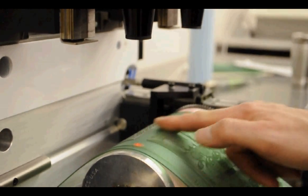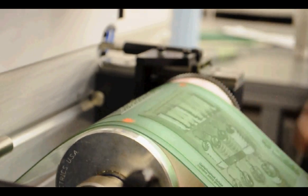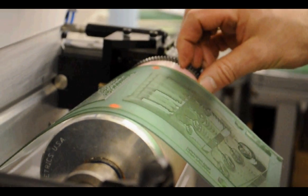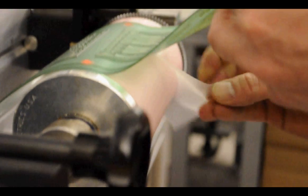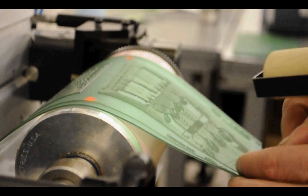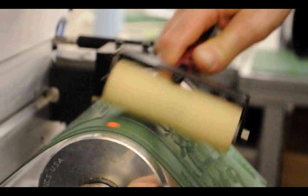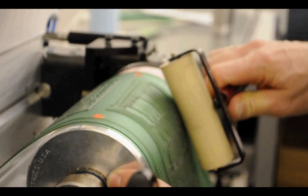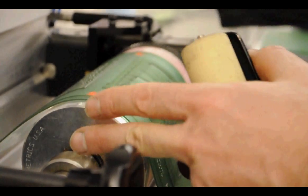So once you have done that, you remove the rest of the protective tape here and roll your plate around the cylinder.